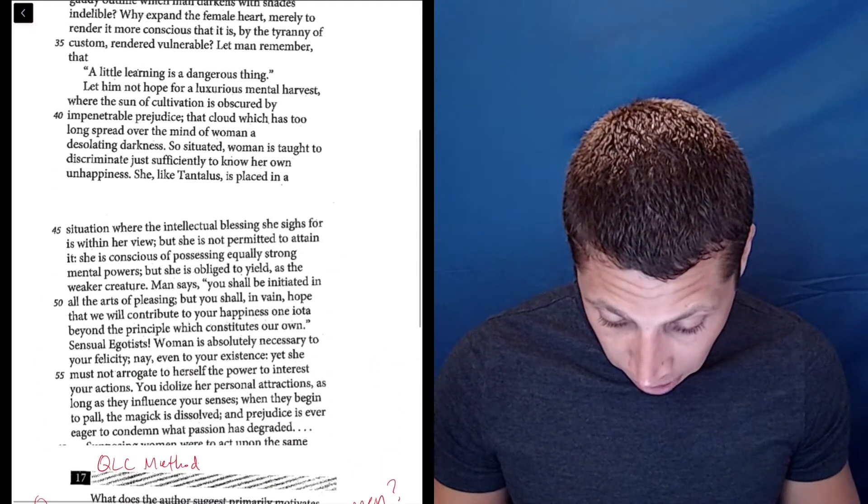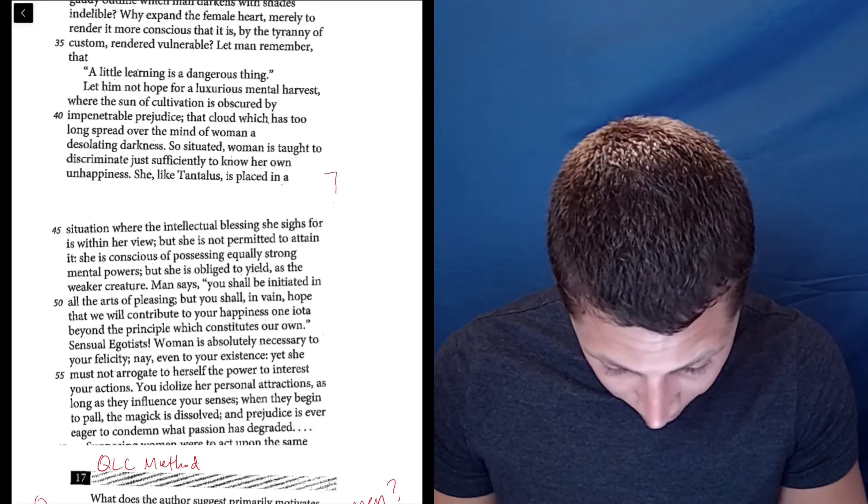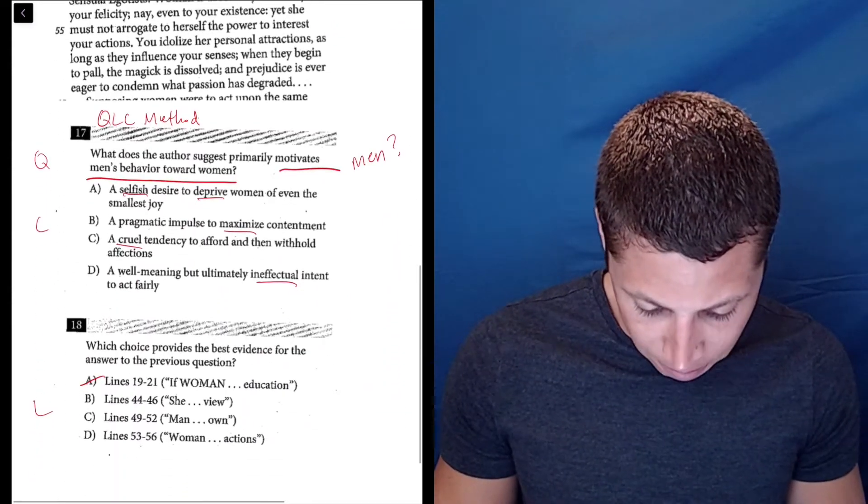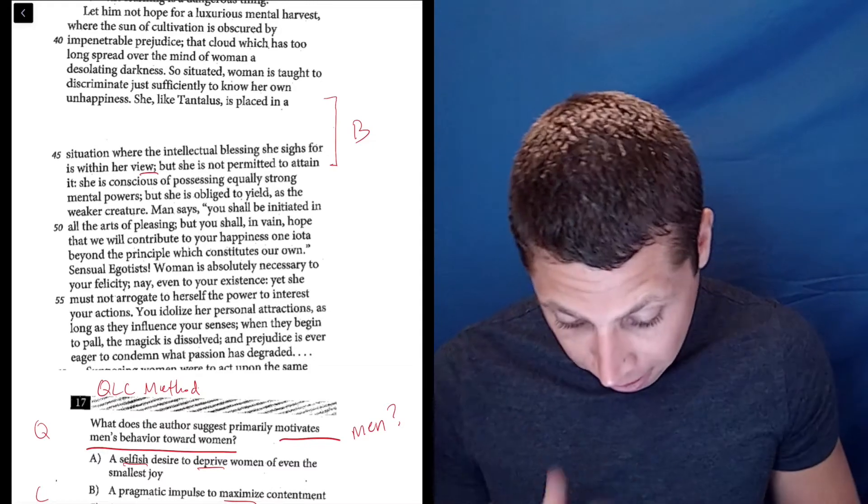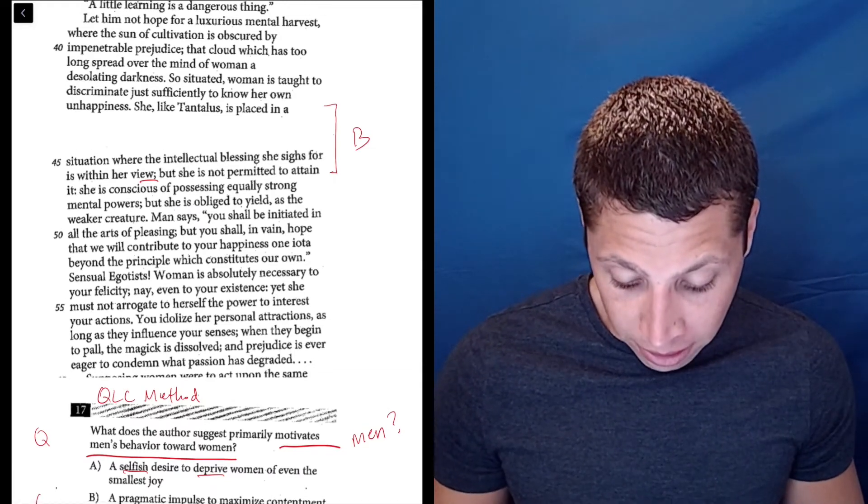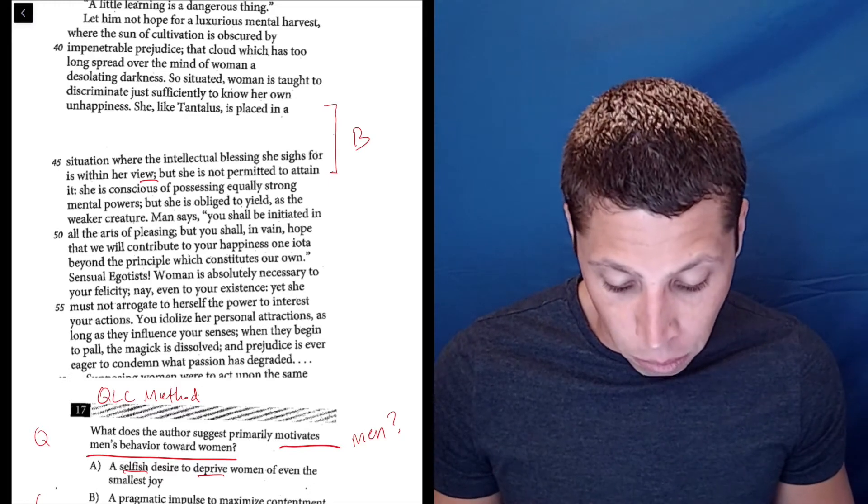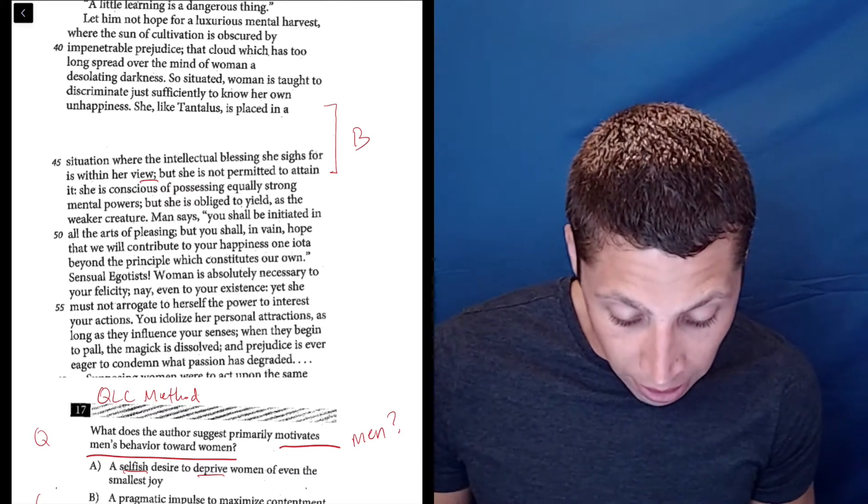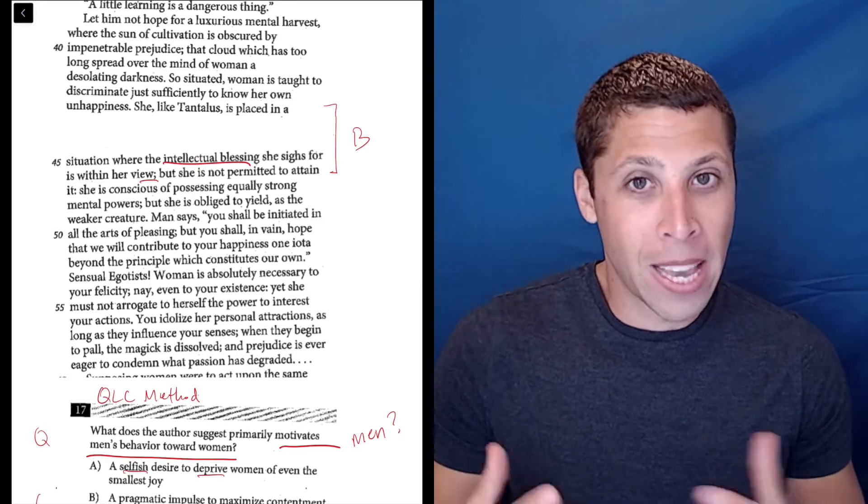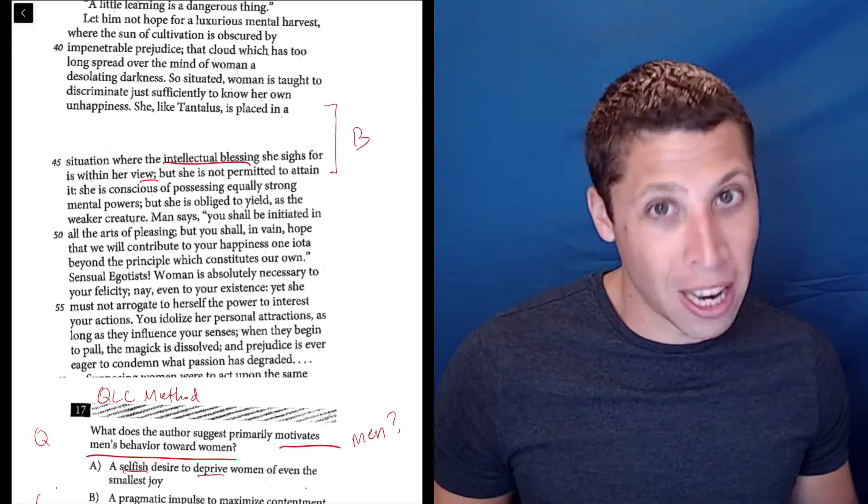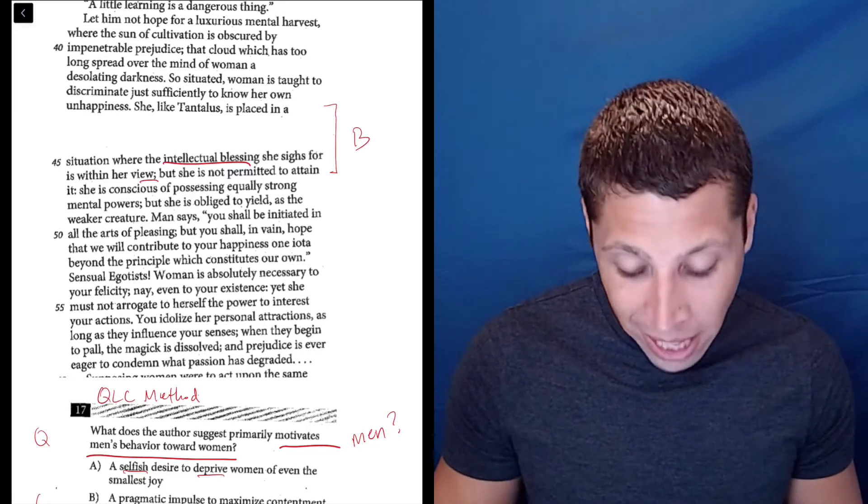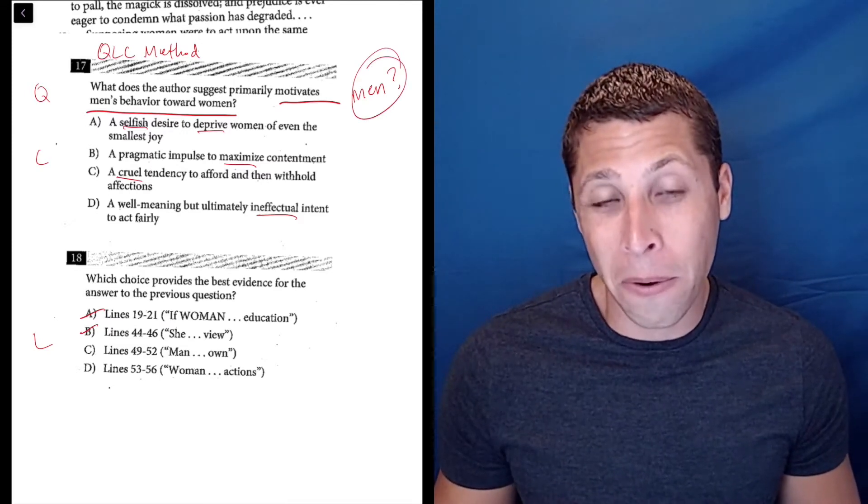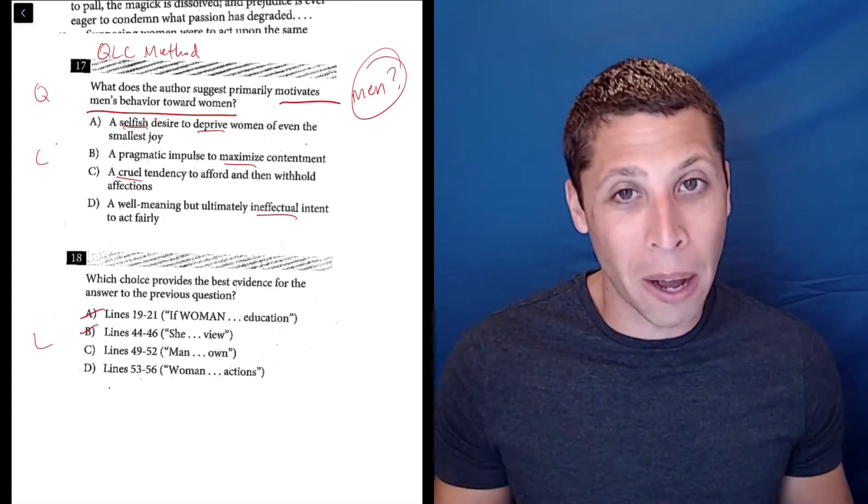Line reference B, 44 to 46. 'She, like Tantalus, is placed in a situation where the intellectual blessing she sighs for is within her view.' Again, this seems to be about women, women's motivations. They want some sort of intellectual blessing, and it's in their view, and presumably men are stopping them from getting it, but that's not in the line. So again, this doesn't seem to be on topic.